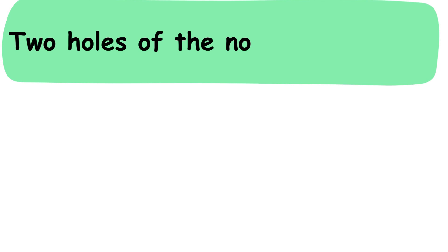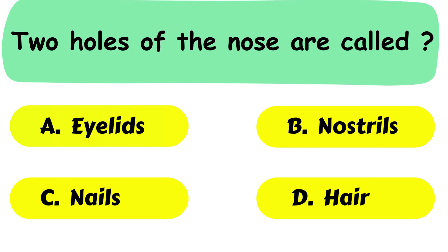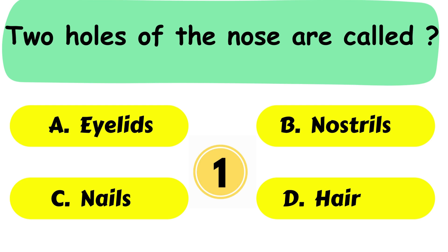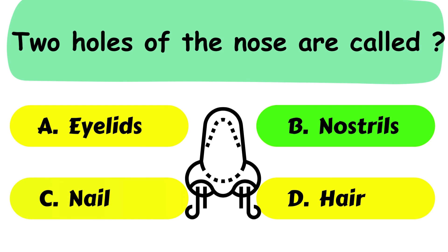Question No. 10. Two holes of the nose are called A. Eyelids. B. Nostrils. C. Nails or D. Hair. Correct answer is option B. Nostrils.